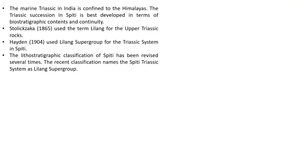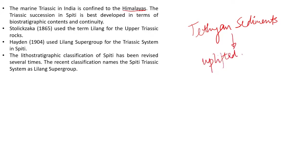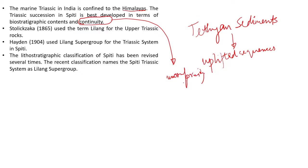The marine Triassic in India is confined to the Himalayas — all the Tethyan sediments. You will find marine Tethyan fossils which got uplifted in the Himalayan orogeny as uplifted sequences. The Triassic succession is best developed in Spiti in terms of biostratigraphic contents and continuity — these are mostly conformable, continuous sequences with rarely any unconformity, making it a key locality to study the Triassic.